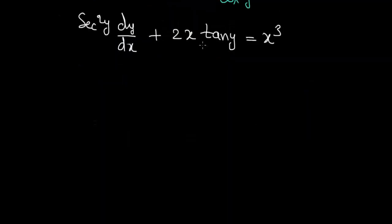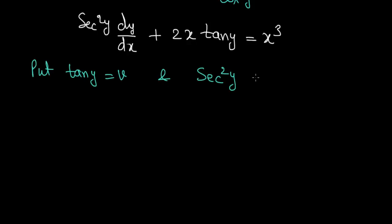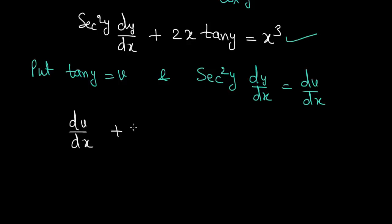To convert to a linear equation, we put tan y = v and differentiate to get sec²y·(dy/dx) = dv/dx. Substituting these values, the equation becomes dv/dx + 2xv = x³, which is a linear differential equation in v.